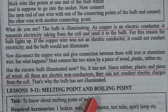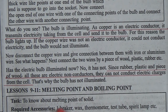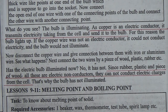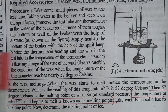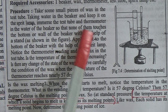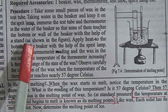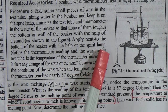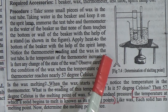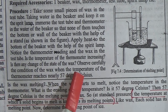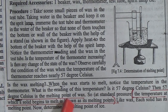Melting point: To find the melting point of a solid, take small pieces of wax in a test tube, place it in a beaker of water on a spirit lamp, and immerse a thermometer in the water without touching the bottom. Apply heat and observe the thermometer reading and the wax. When the temperature reaches approximately 57°C, the wax begins to melt — so 57°C is the melting point of wax.